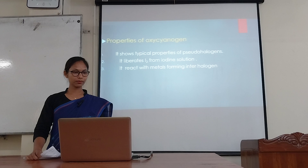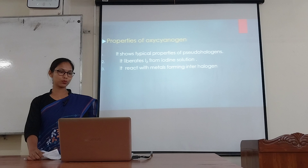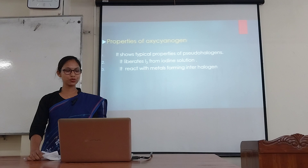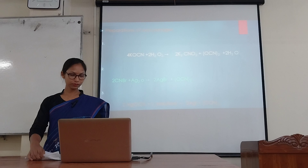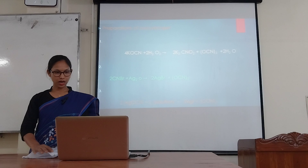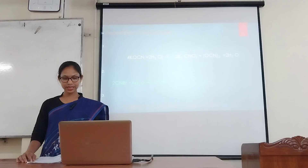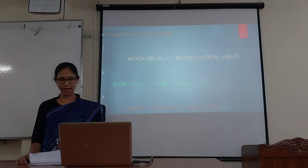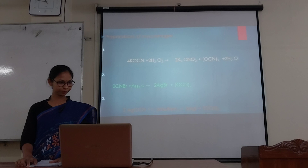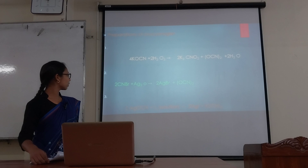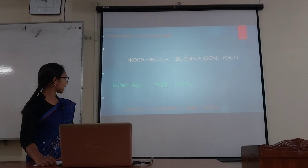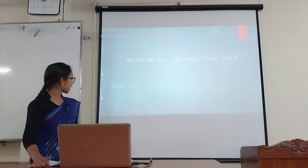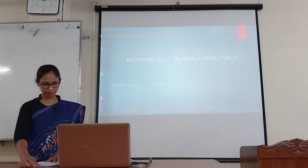Properties of oxycyanogen: it shows typical properties of pseudohalogens. It liberates iodine from iodine solution and reacts with metals forming halides. Preparation of oxycyanogen: it is prepared by the action of hydrogen peroxide with potassium cyanide. It can also be formed by reaction of silver dioxide with cyanogen bromide, and by the action of silver cyanide with iodine in carbon disulfide and carbon tetrachloride.